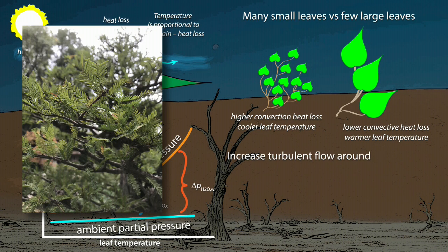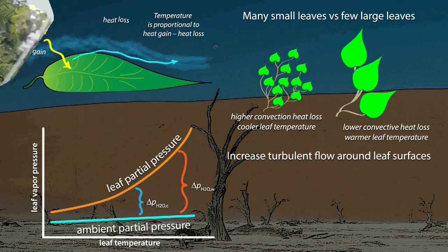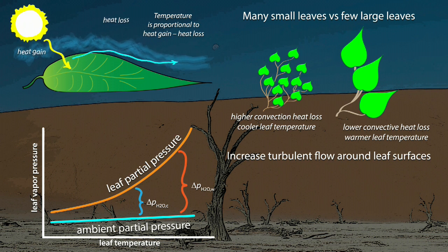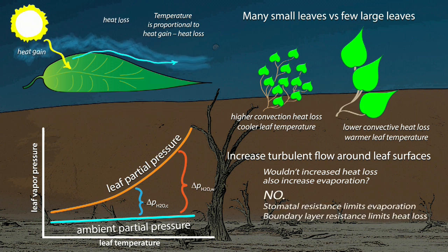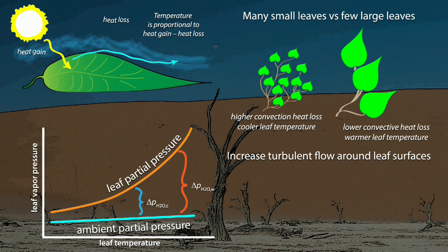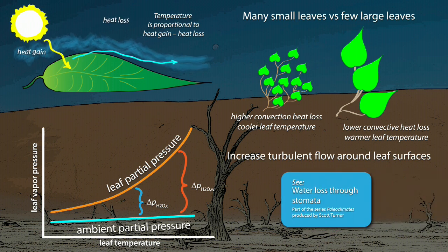Another way to cool the leaf is to generate turbulent wind flow around the leaf surface. This will increase heat loss from the leaf by facilitating heat loss through the leaf's surface boundary layer. This could theoretically also increase water vapor loss, but because the limiting resistance for water vapor diffusion is the stomata, or its pits, increasing turbulence will have little effect on evaporation from the leaf. For a brush-up on this, look at the video on stomatal resistance to water vapor loss.